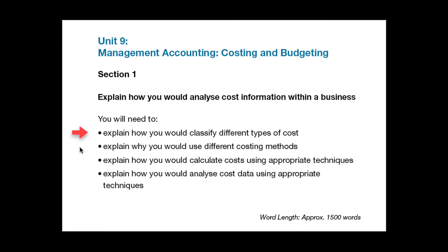On bullet point 2, you need to briefly describe the different costing methods such as job, standard, activity based, service and batch costing, and explain why and in what circumstances or types of organisation one costing type would be selected rather than another.